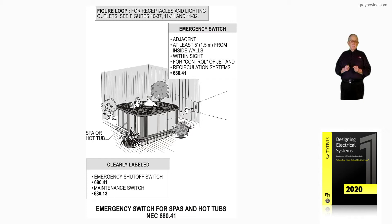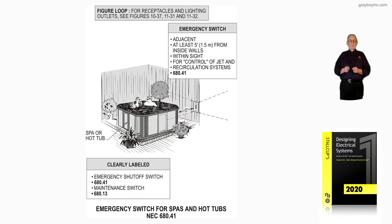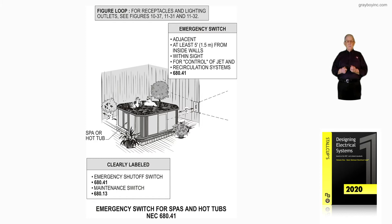This illustration deals with the emergency switch for SPAs and hot tubs in accordance with 680.41. We have talked about this emergency switch in previous illustrations, and here we highlight it. Notice within five feet of the SPA or hot tub, we have the emergency switch. If any accident or incident occurred in and around that SPA or hot tub, within five feet, you have an emergency switch to shut it down.